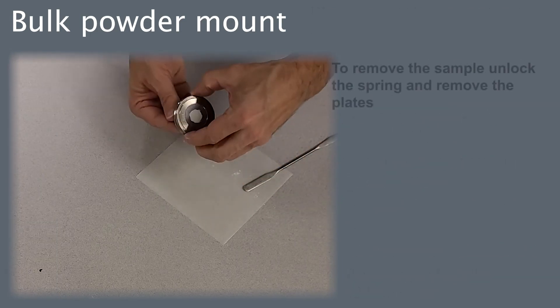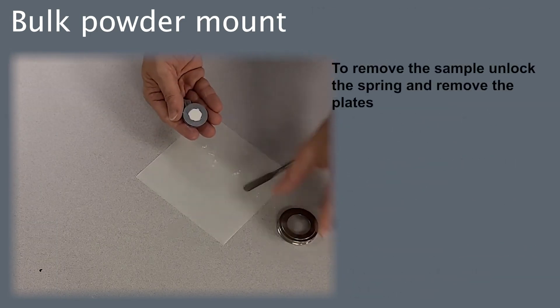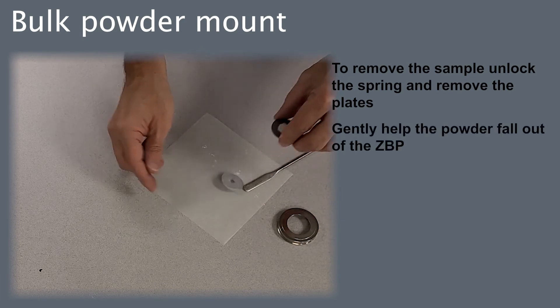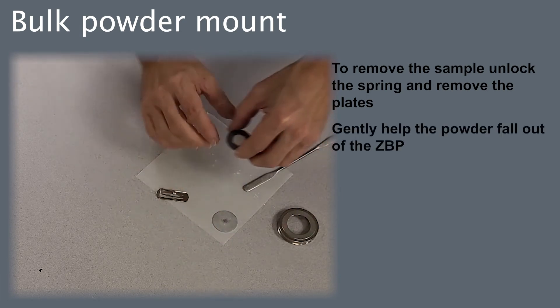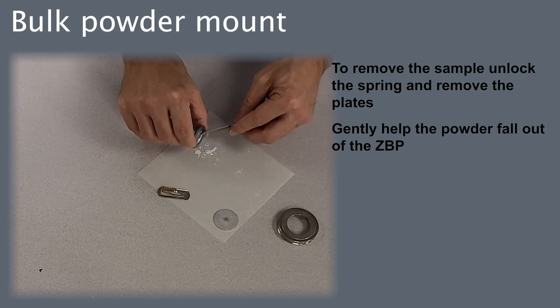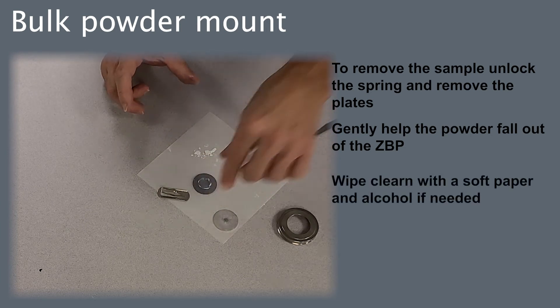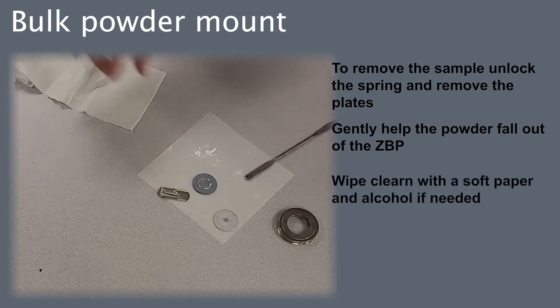To remove the sample, unlock the spring and remove the plate. Gently help the powder fall out of the zero background plate. Wipe clean with a soft paper and alcohol if needed.